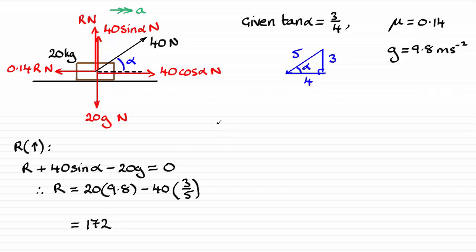Okay, so that's that part done. Now all we need to do next is just look at resolving horizontally. So we'll resolve horizontally to the right, taken as positive in the direction of the acceleration. Always do that. That means that the forces acting to the right is going to be the 40 cosine of alpha, so that's 40 cosine alpha, and that's in the positive sense.